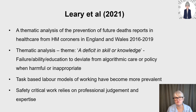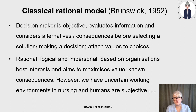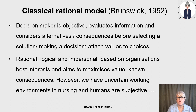Looking at initial models that have informed current decision making frameworks: the classical rational model from Egon Brunswick (1952) proposes that individuals use cues from the environment and aim for empirically accurate decisions. The decision maker is objective — they evaluate information and consider alternatives and consequences before selecting a solution, sometimes attaching values to different choices. It's a rational, logical, and impersonal approach based on the organization's best interests, aiming to maximize value.